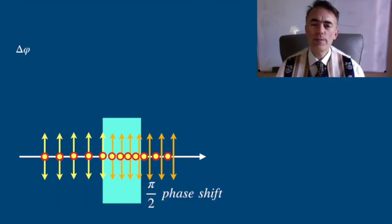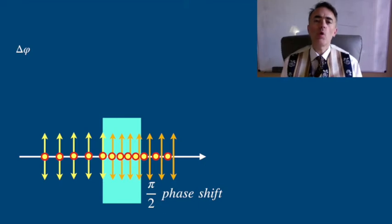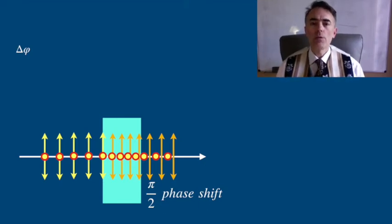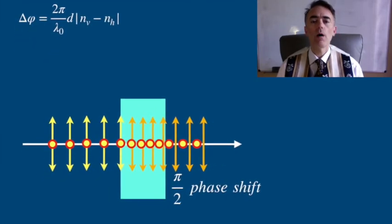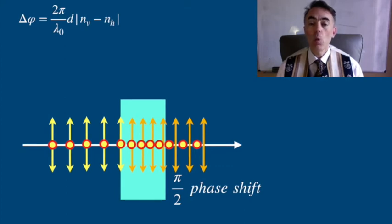The phase difference delta phi between the horizontal component and the vertical component is then 2π over lambda nought times d times the difference in the indexes of refraction, where lambda nought is the wavelength of light in a vacuum.